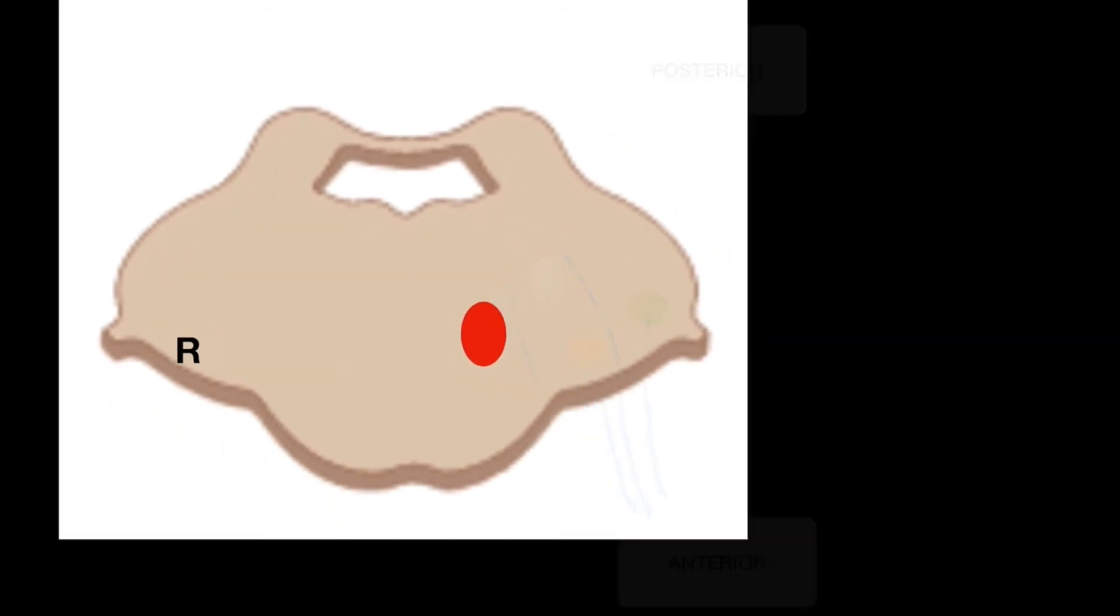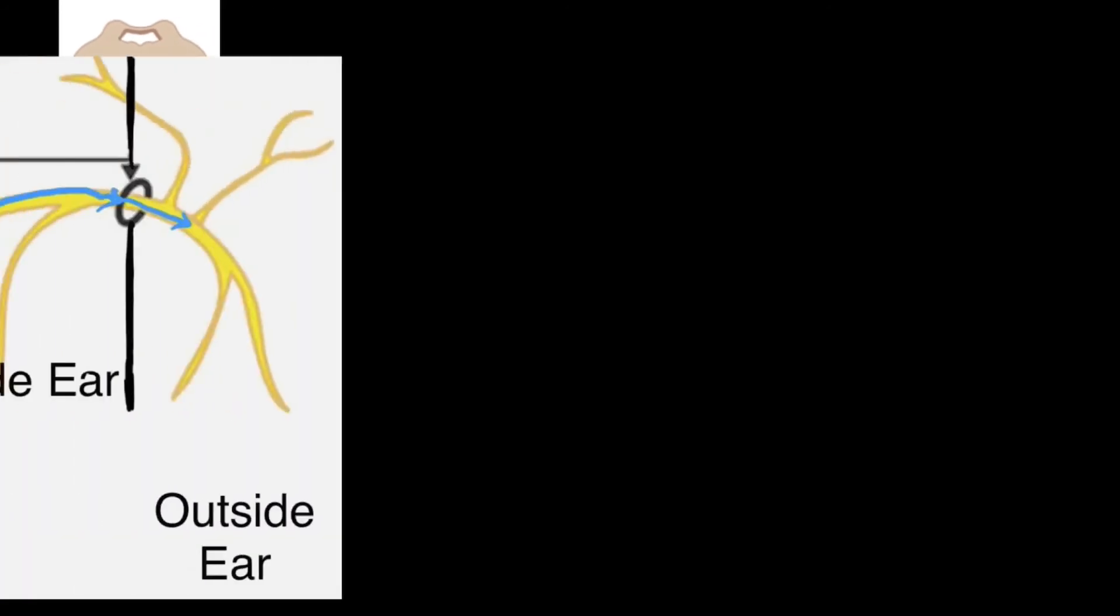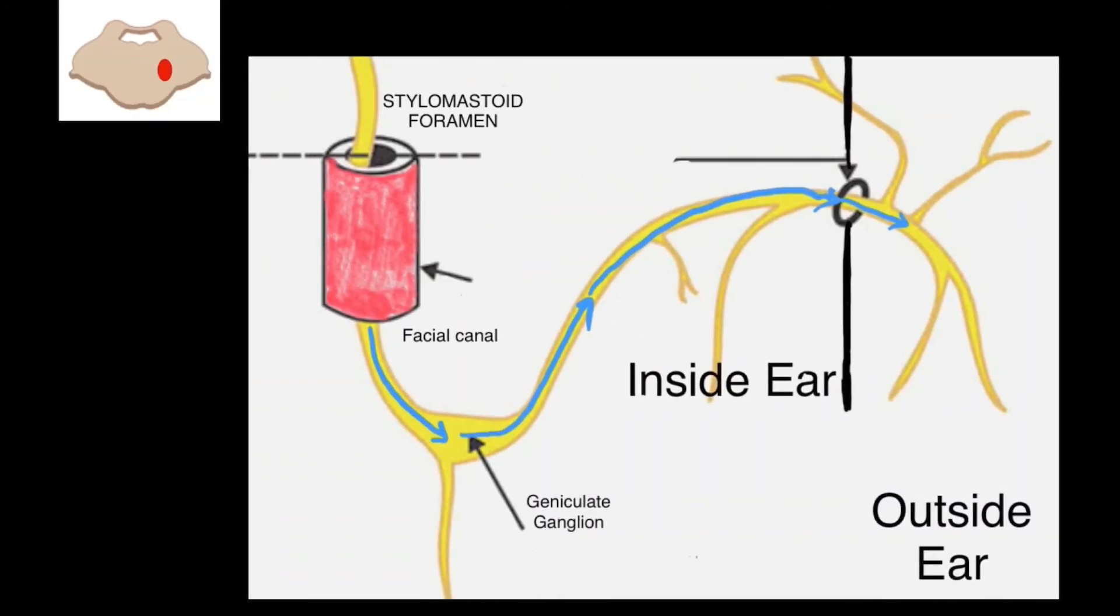And then they enter into the internal acoustic meatus. Here, it gives branches like chorda tympani branch, branch to stapedius, and finally, greater petrosal nerve.